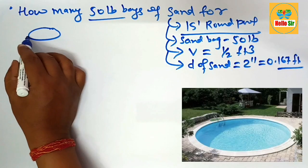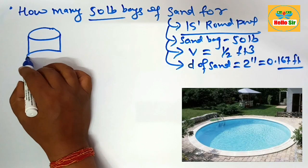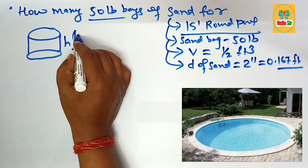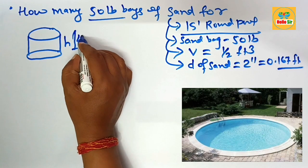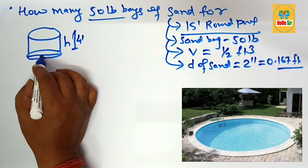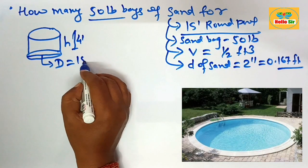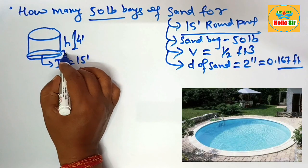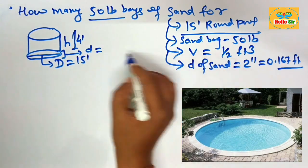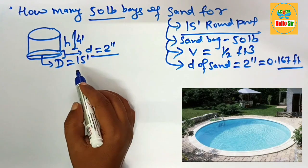Here we make a rough diagram for a round pool. This is the round swimming pool — the height of the pool ranges between 4 to 8 feet, the diameter of the pool is given as 15 feet, and the depth of sand is equal to 2 inches.